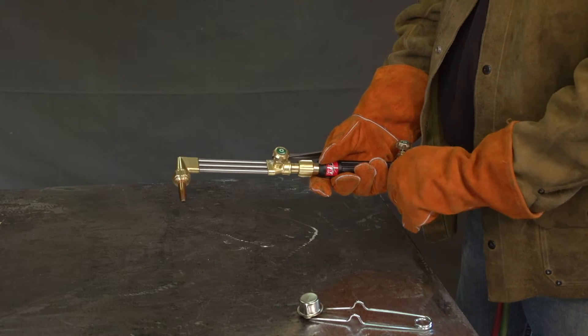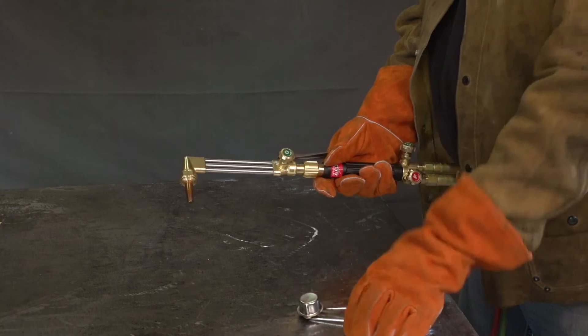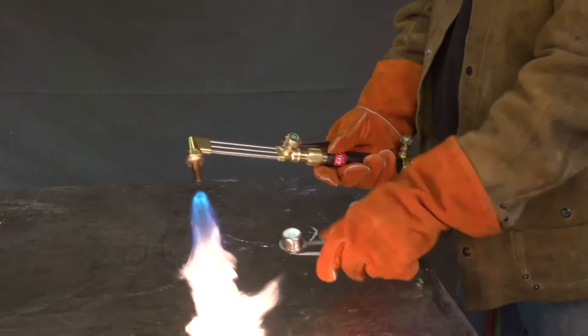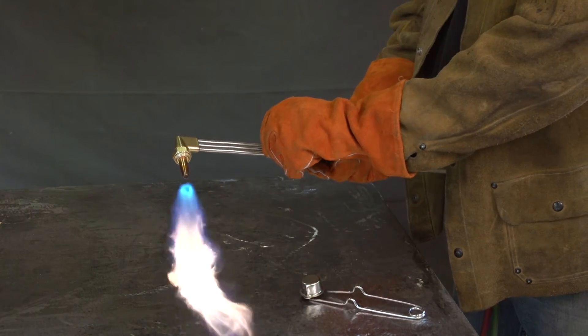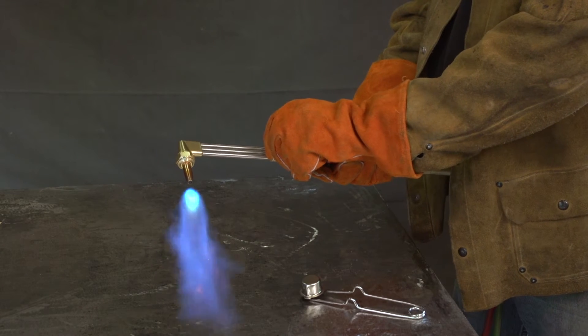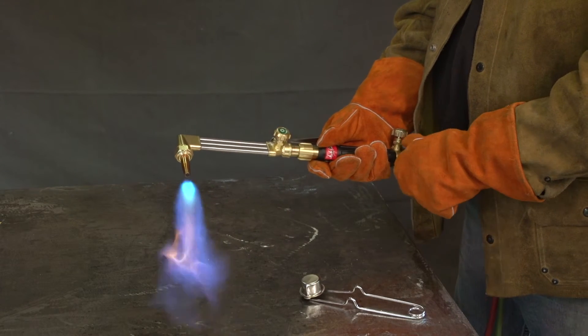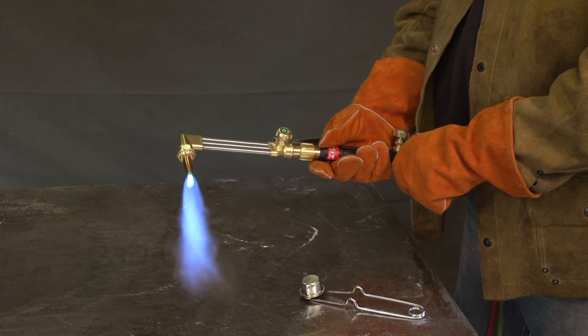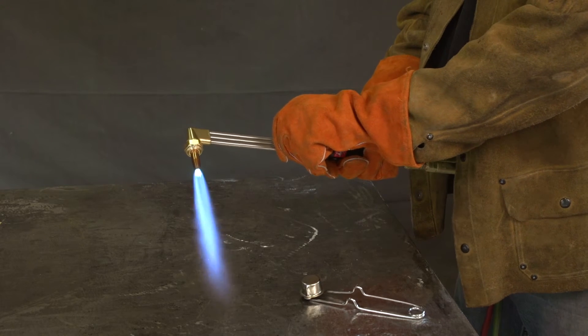Technique 3. Turn both the fuel and oxygen valves one-quarter to one-half turn. Light the flame as soon as possible and walk up the flame. This is not recommended with acetylene, and you must purge the system before lighting the torch.